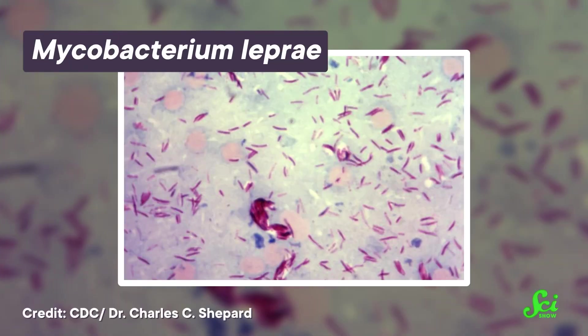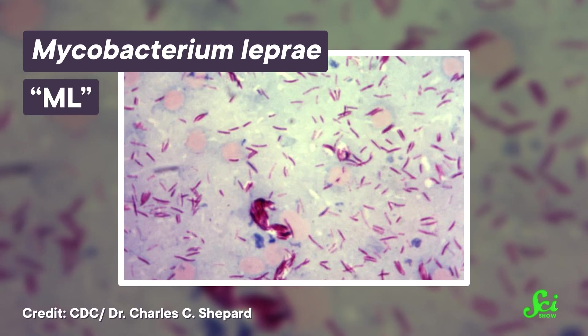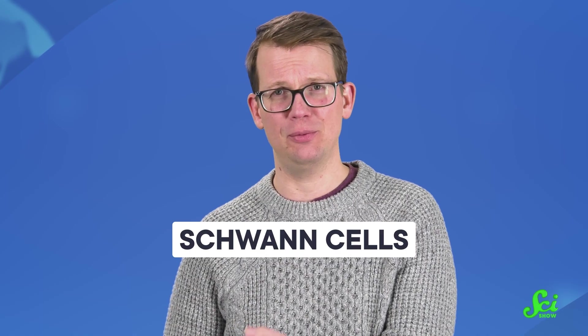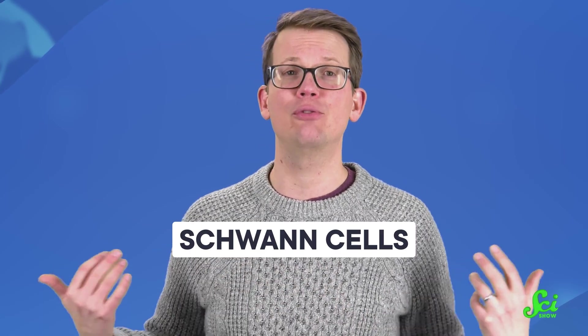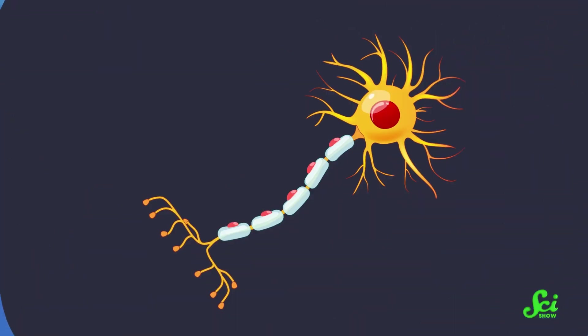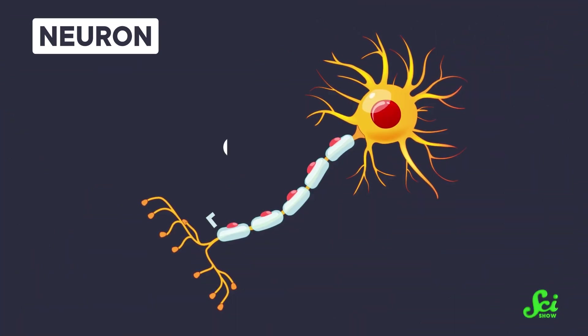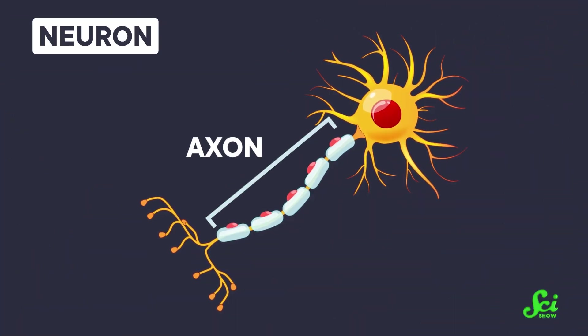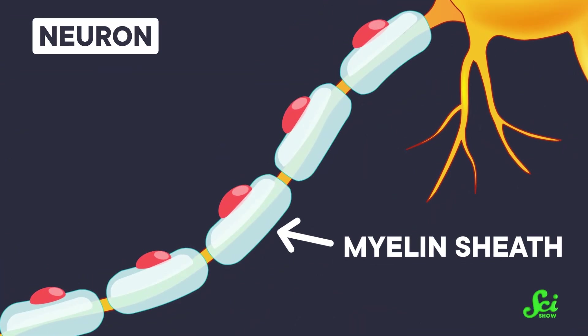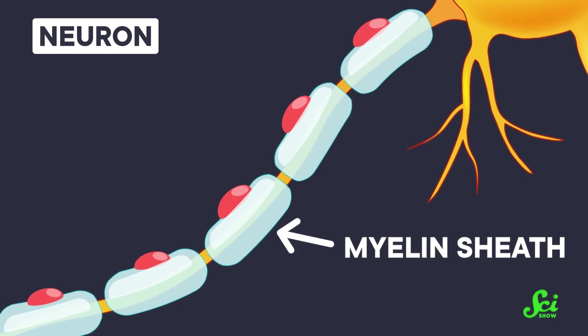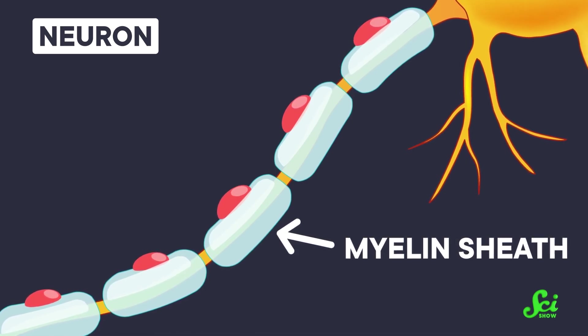Hansen's disease is an infectious disease caused by a bacterium called Mycobacterium leprae, or ML for short. In humans, these bacteria infect Schwann cells, which are cells that protect the peripheral nervous system — that is, the parts outside of your brain and spinal cord. Schwann cells provide insulation for the long axons of nerve cells. Some of them form the myelin sheath, which helps to transmit electrical impulses that carry messages between nerve cells.